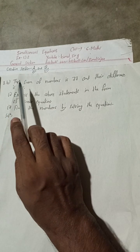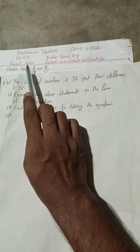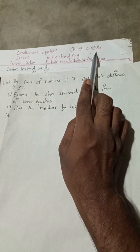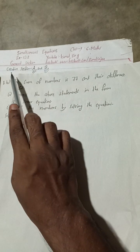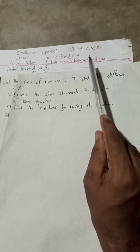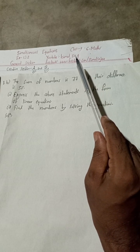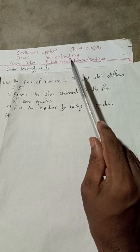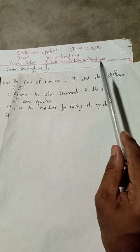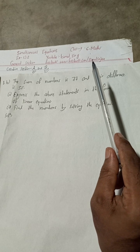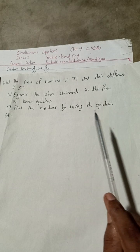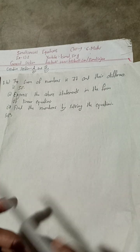Hi everybody, welcome back to question number 1b of general section, exercise 12.2, simultaneous equations, class 9 compulsory maths solutions, for creative section A and creative section B. All these solutions have been uploaded in my Vimal Sarjan YouTube channel — you can check the playlist. If you are watching on Facebook, follow me there to get notifications of newly uploaded videos.